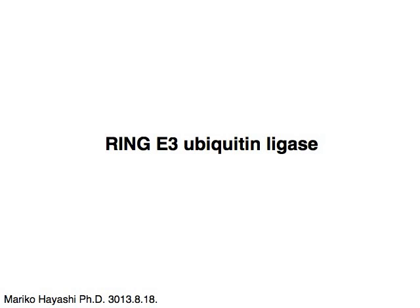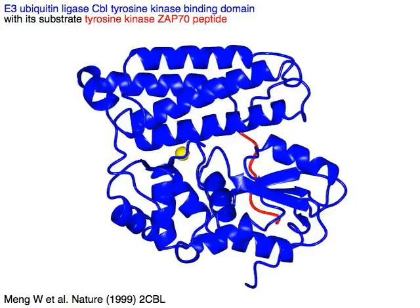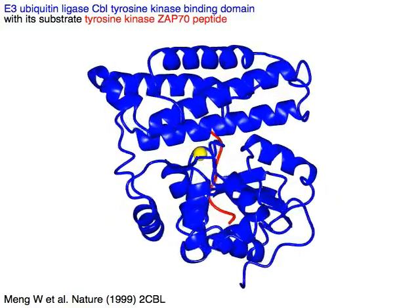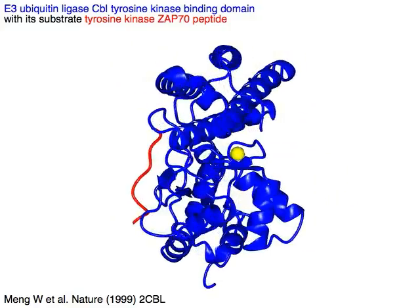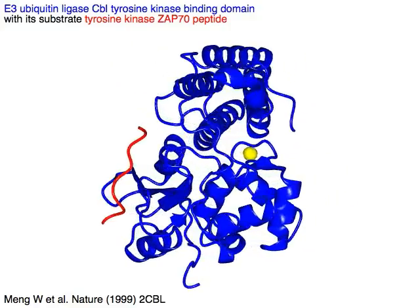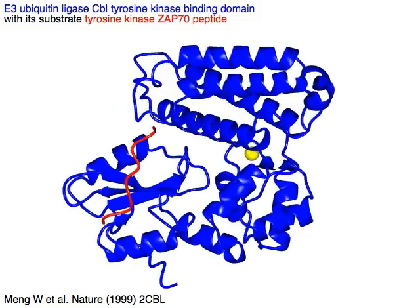Ring E3 ubiquitin ligase: the tyrosine kinase binding domain of ring E3 ubiquitin ligase CBL is shown in blue, with its substrate tyrosine kinase ZAP70 peptide shown in red.